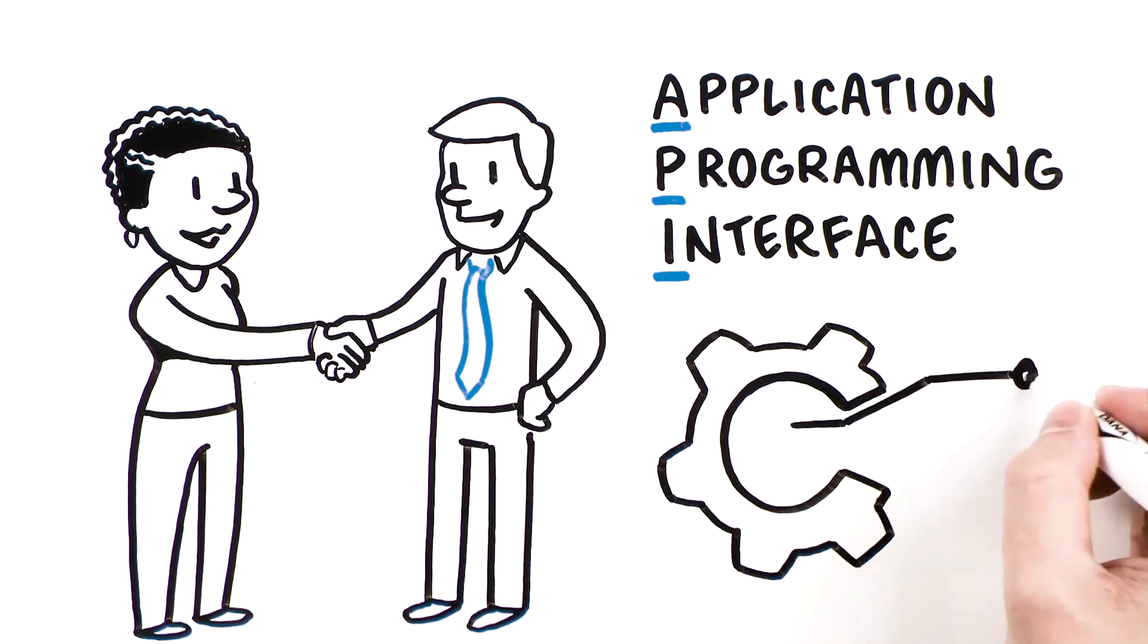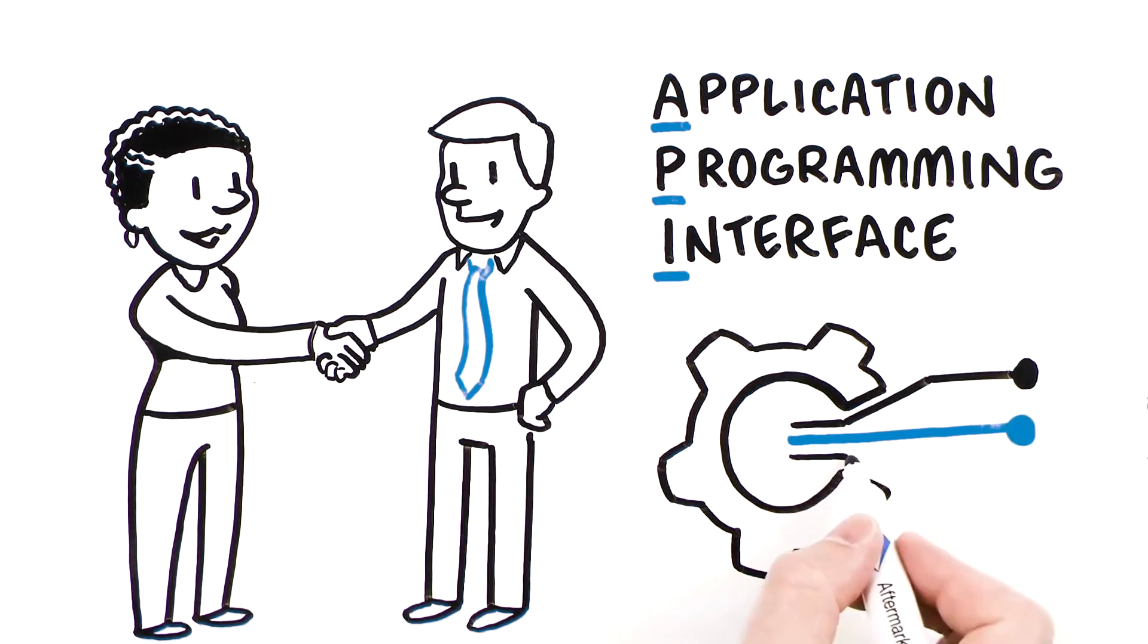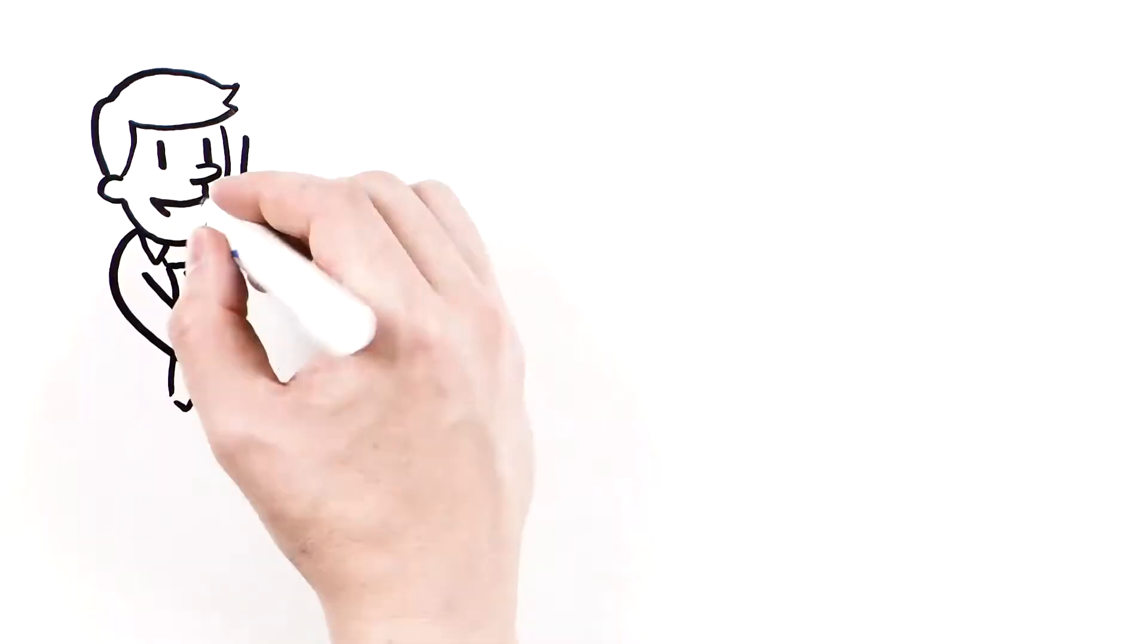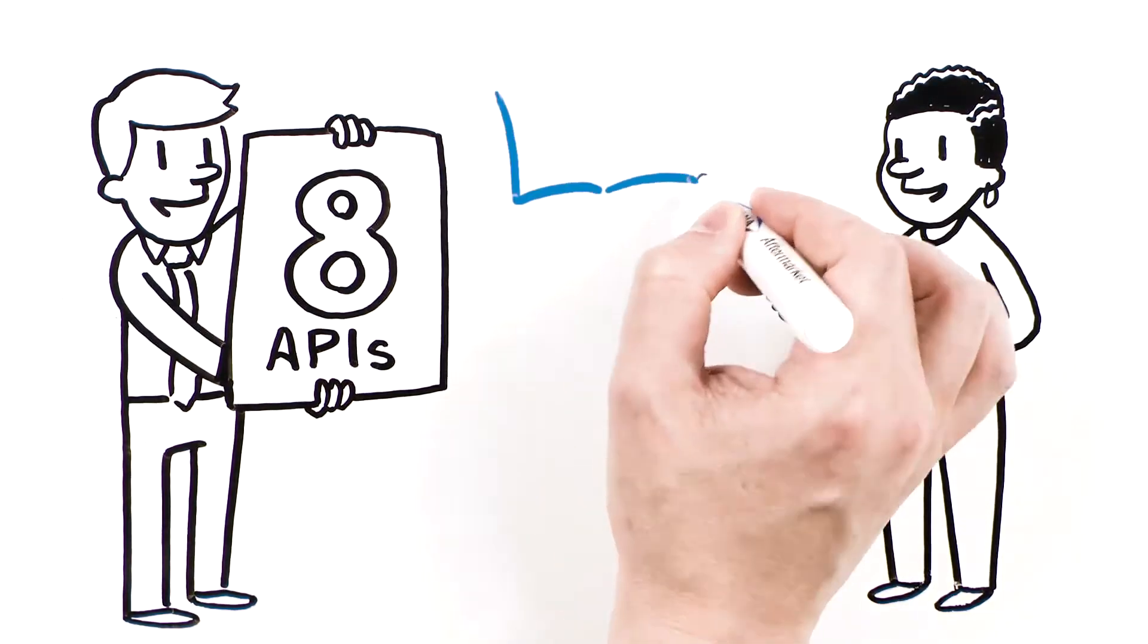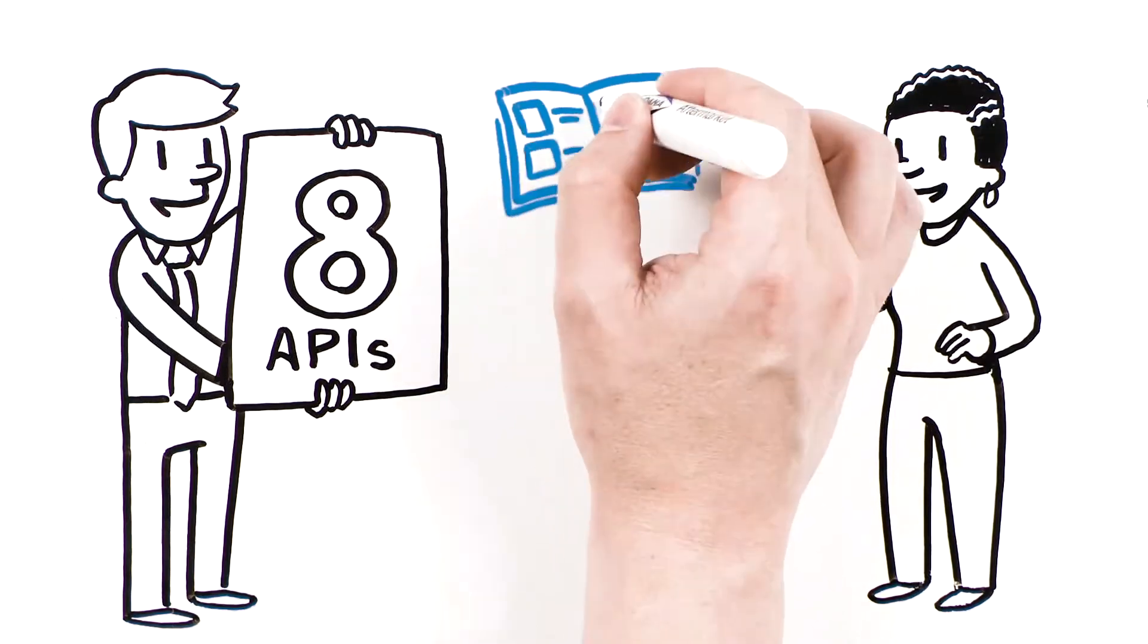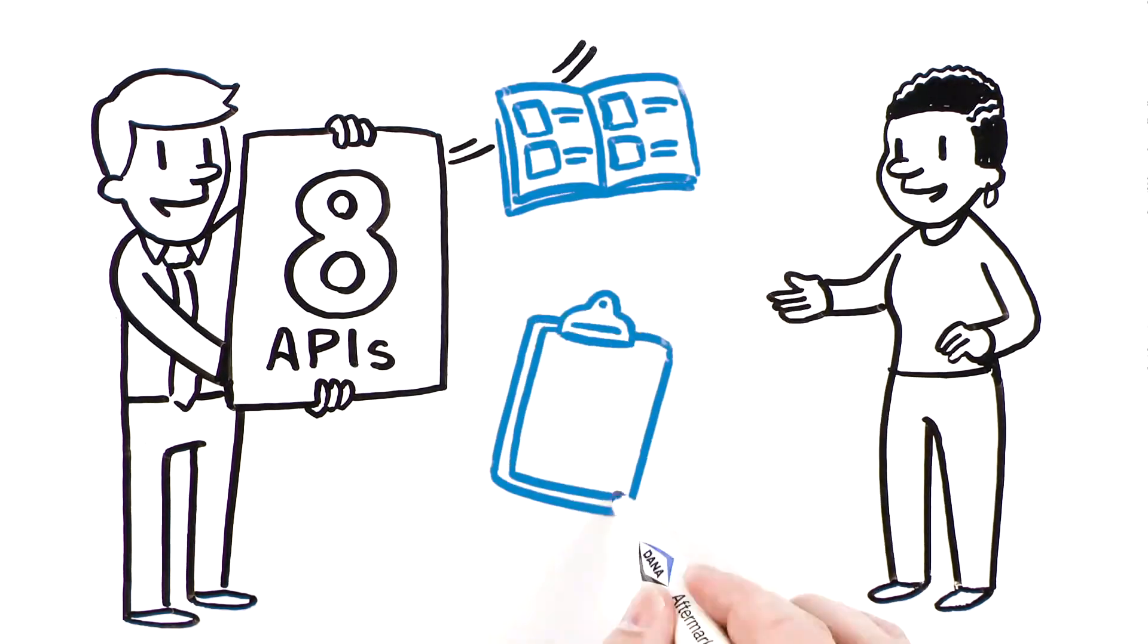APIs let developers quickly enable a productive result between two otherwise disconnected systems. Dana currently offers eight active APIs to customers like Wendy, and she's particularly interested in two of the most popular ones, Catalog and Inventory.